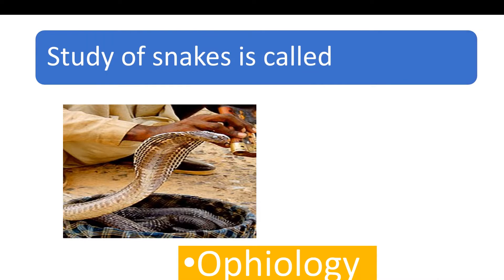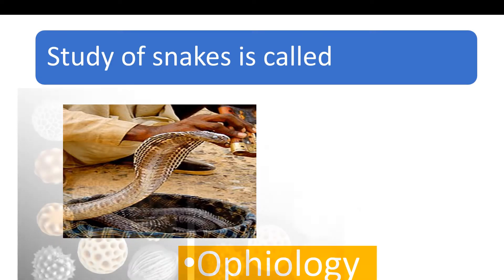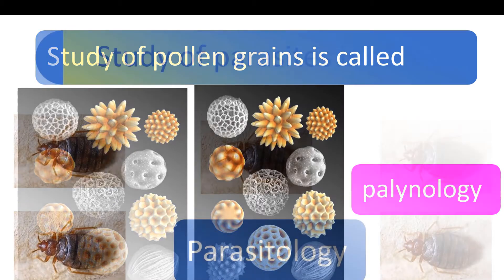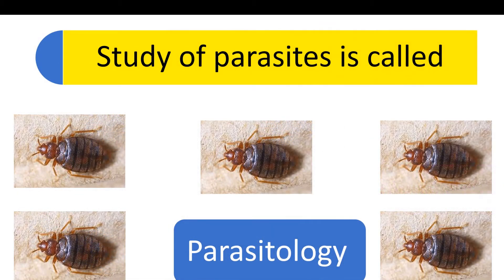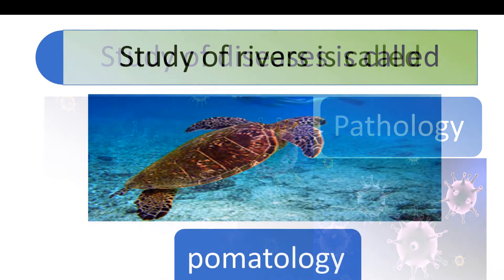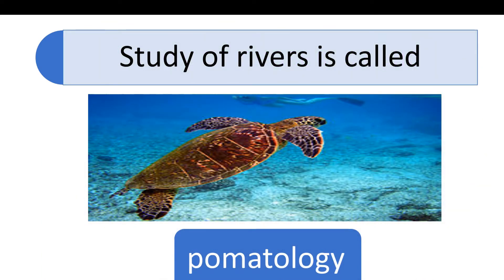Study of snakes is called Osteology. Study of polygreens is called Paleontology. Study of parasites is called Parasitology. Study of diseases is called Pathology.